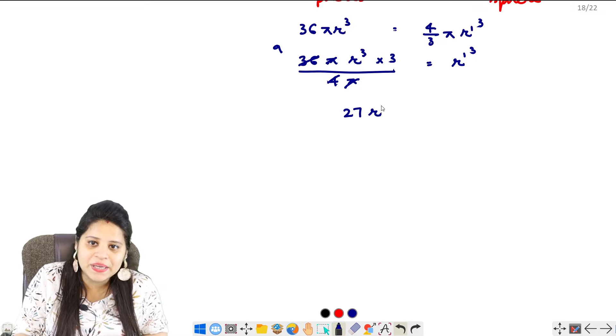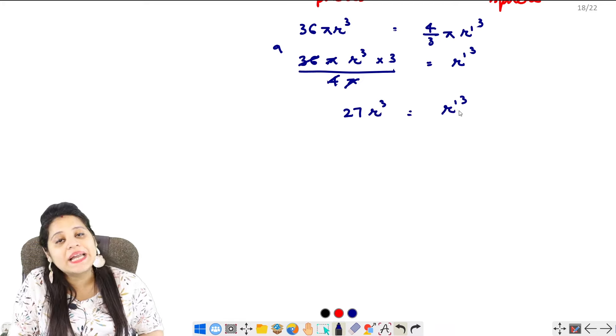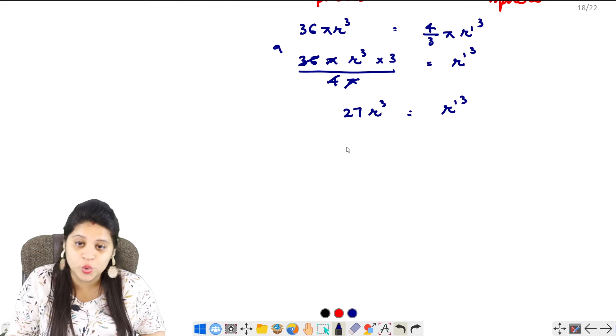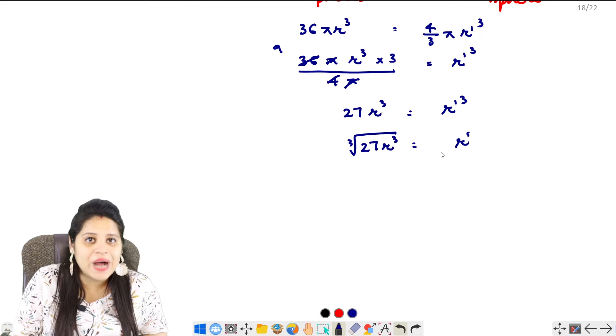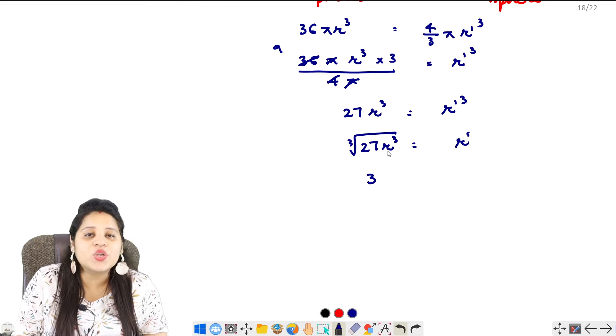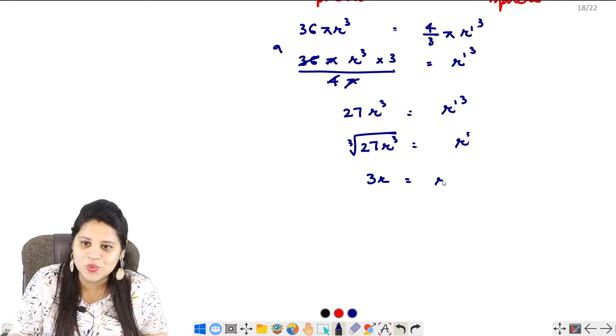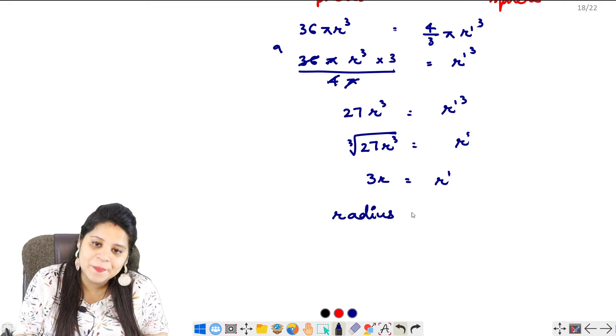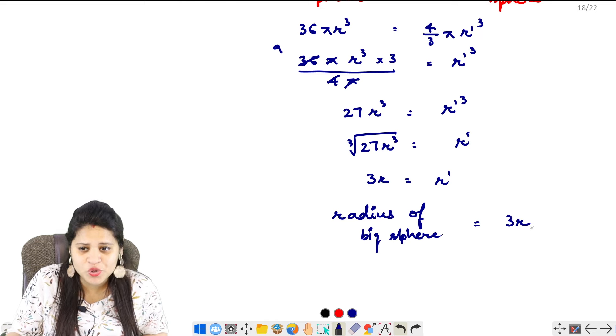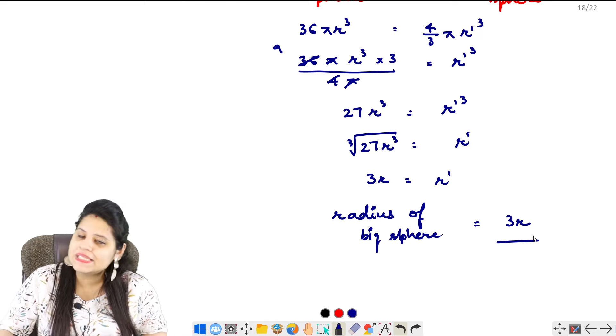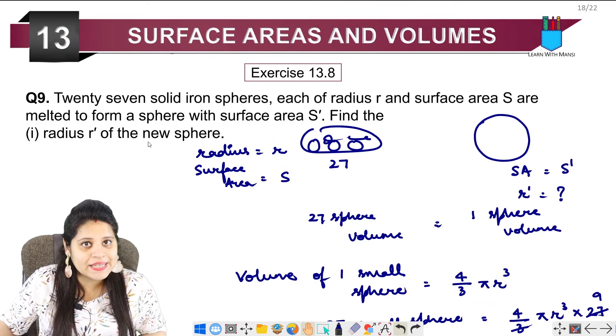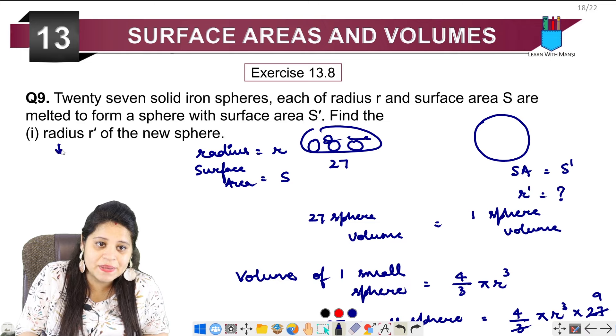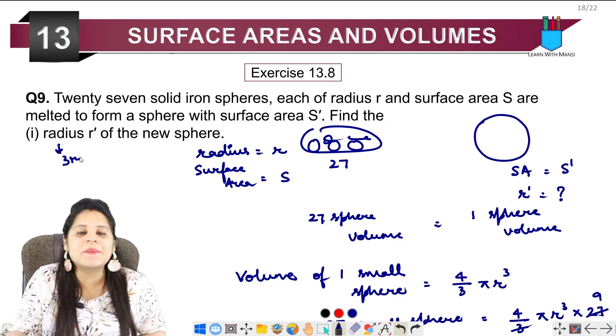27 times 4 upon 3 gives 36, so we get 27r cube equals r dash cube. If we take the cube root, r dash equals cube root of 27r cube, which is 3r. So the radius of the big sphere has become equal to 3r. This is the first part - the radius r dash is 3r.